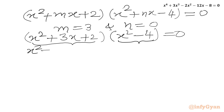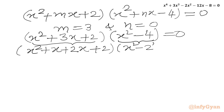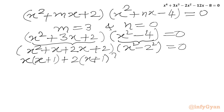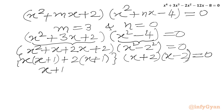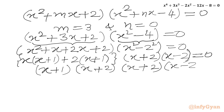Factoring x² + 3x + 2: we write x² + x + 2x + 2, take x common from the first two terms to get x(x+1), and take 2 common from the last two to get 2(x+1). So this factors as (x+1)(x+2). And x² − 4 = (x+2)(x−2) by the difference of two squares identity. This gives us (x+1)(x+2)(x+2)(x−2) = 0.